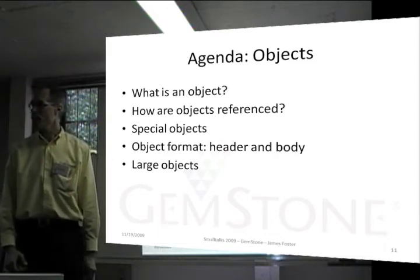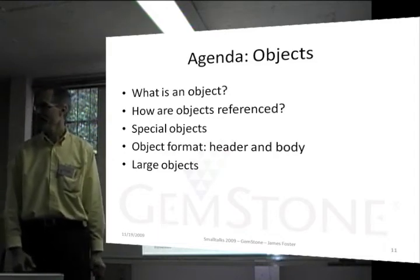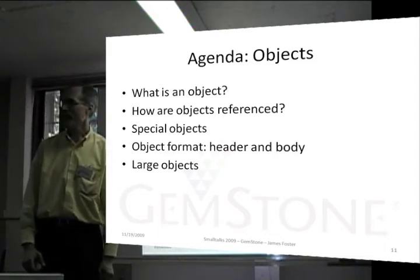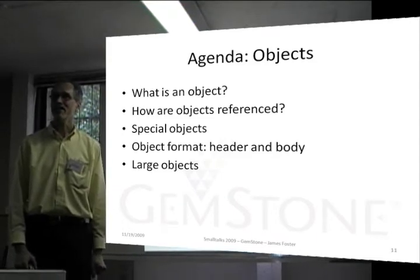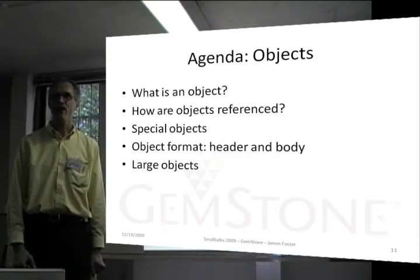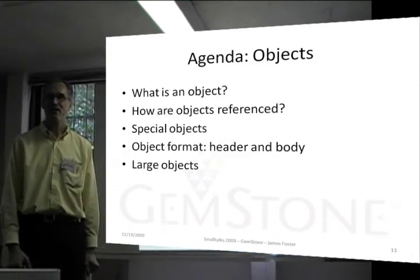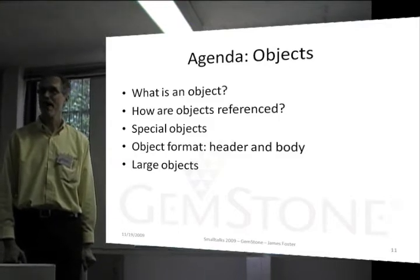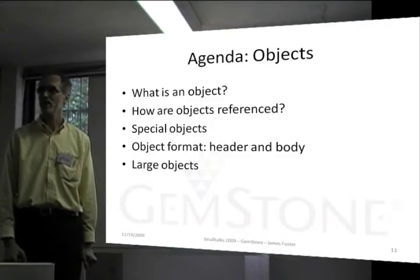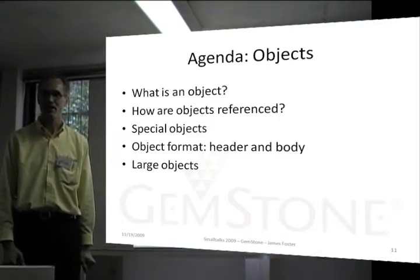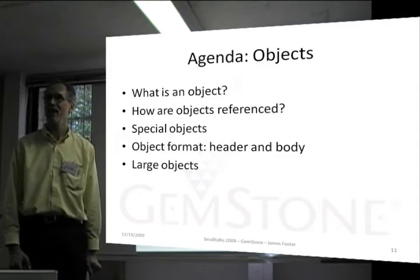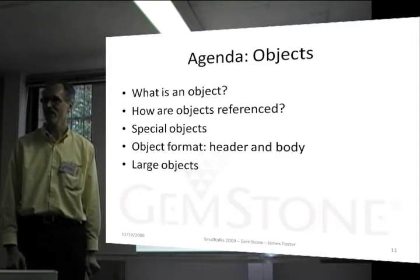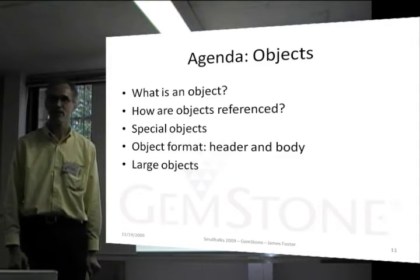We're looking at an object system. In an object system, we have objects. What are objects? How are they stored? How are they referenced? What sort of special formats are there for special objects? And then, how do we handle very large objects in a GemStone system?